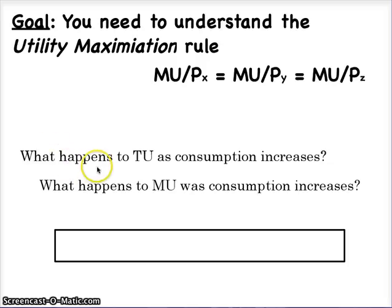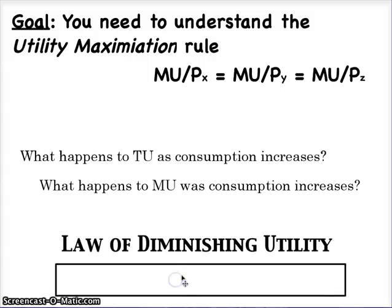Questions we want to pay attention to: what happens to total utility as consumption increases? As you consume more and more of an item, what happens to your levels of satisfaction? We also want to find out what happens to marginal utility as consumption increases. There's a law we have to memorize — the law of diminishing marginal utility — and the name itself should give you a good clue to the answer.